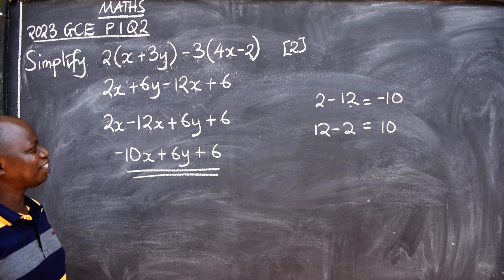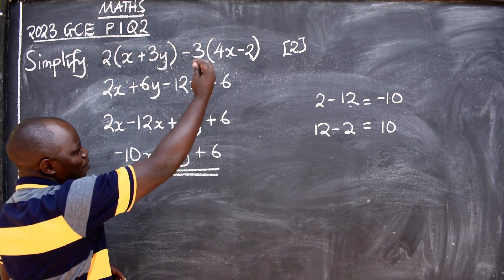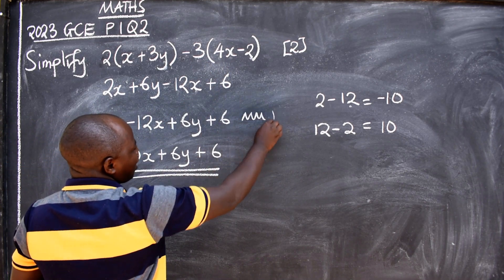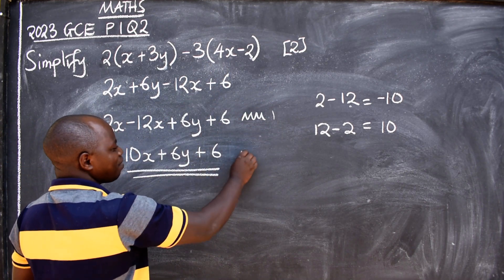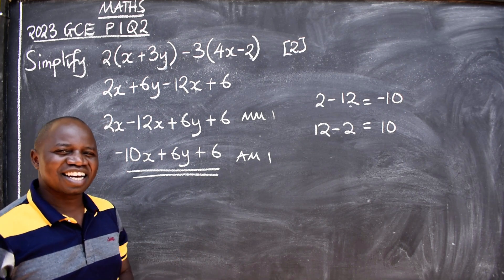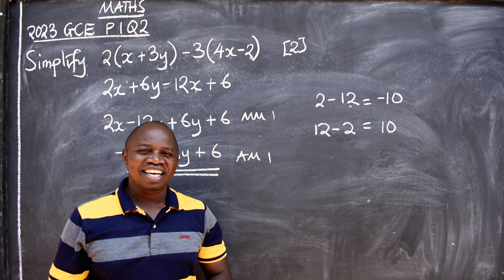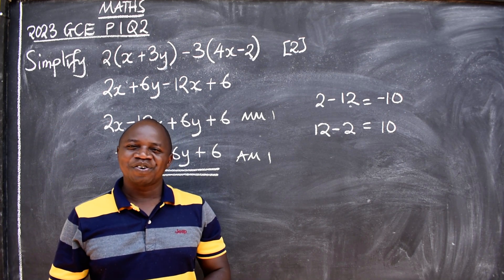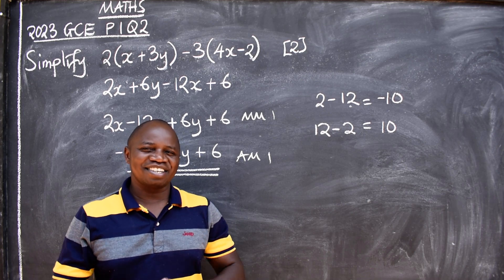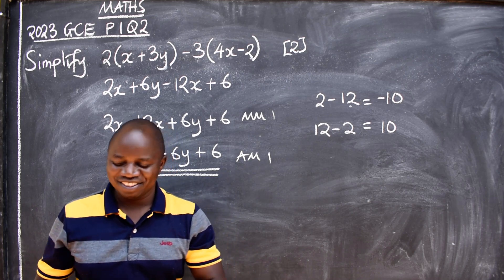Just like that. The two marks you have: the method mark is one, and your final answer mark is one — you get the entire two marks. I hope you have enjoyed the lesson. Bye-bye.